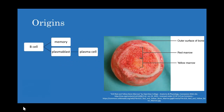So where do plasma cells come from? They originate from B cells, which are made in the red marrow — you can see the red marrow here in this femur. The red marrow makes B cells, which are lymphocytes, a type of white blood cell. These cells are then secreted into the circulation, where they travel in the blood and lymph and like to hang out in the lymph nodes.